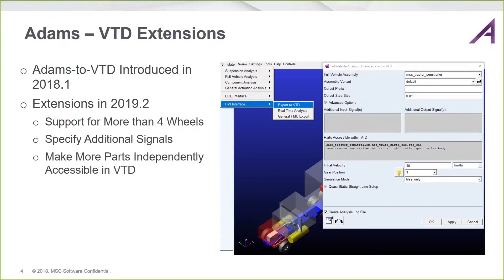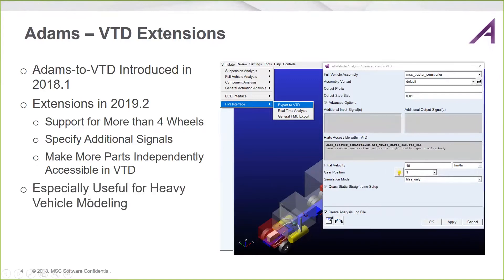Lastly, we can make more parts accessible within VTD than previously. In addition to the main chassis part, which is always there by default, other parts can now be selected and visualized in VTD. This is useful where there are relative motions between vehicle parts. For a heavy truck, for example, you may want to see the tractor and trailer move differently, or even see portions of the cab move differently relative to the tractor. This feature now enables that kind of visualization, really focused on heavy truck modeling.